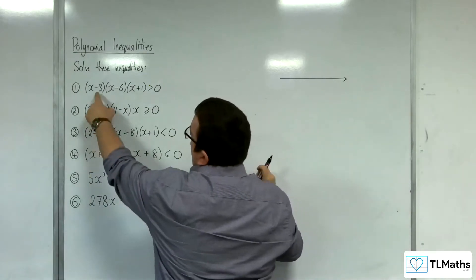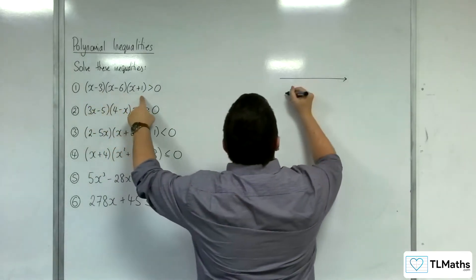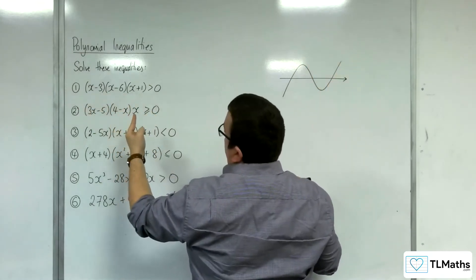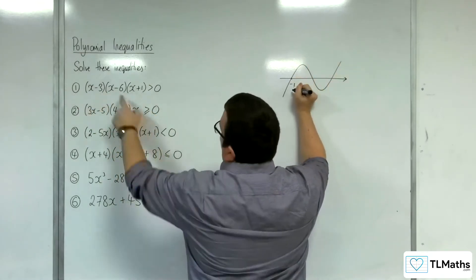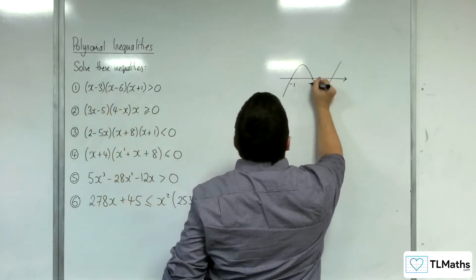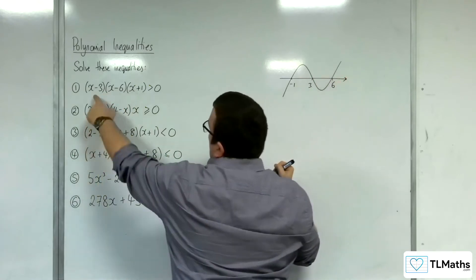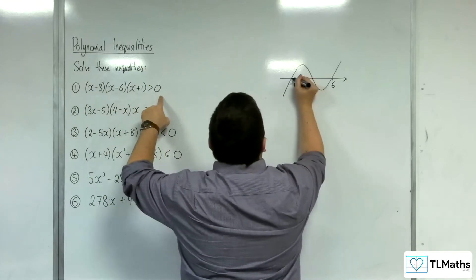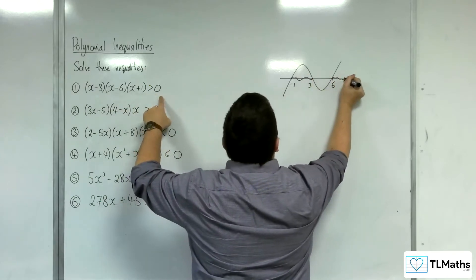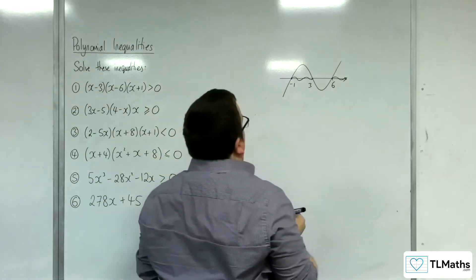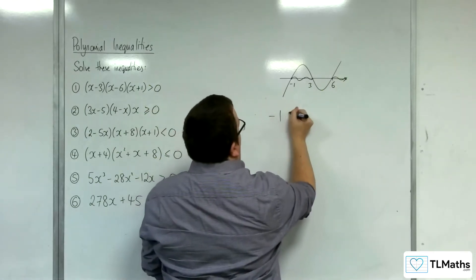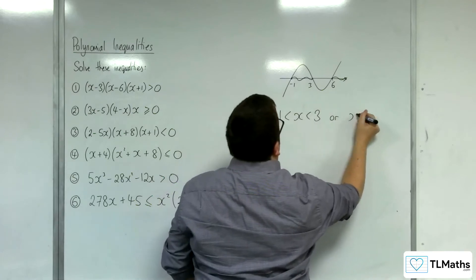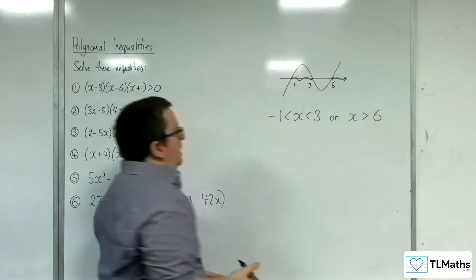It's a cubic crossing through at 3, 6, and minus 1, starting at the bottom left and working its way to the top right because it's a positive x cubed. We have minus 1, 3, and 6, and we're asking where the cubic graph is above the x-axis — it's above it there and there. So the solution is x greater than minus 1 but less than 3, or x greater than 6.